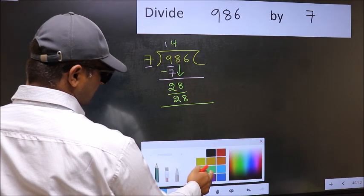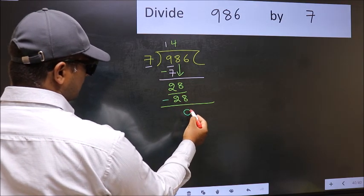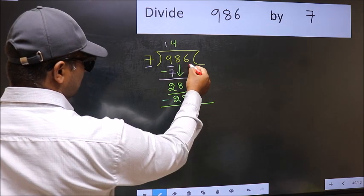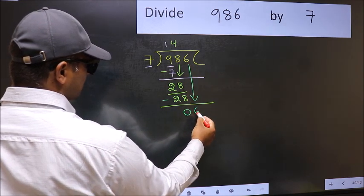Now you should subtract. 28 minus 28, 0. After this, bring down the beside number. So 6 down.